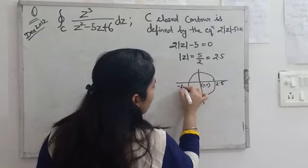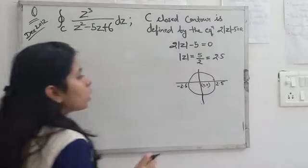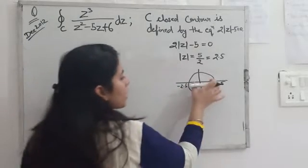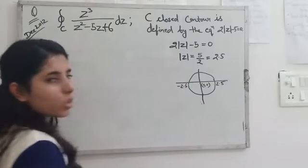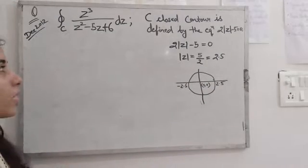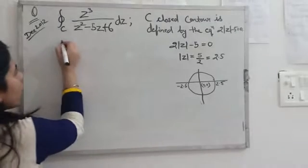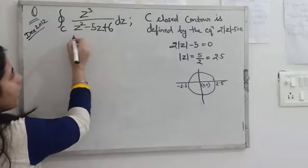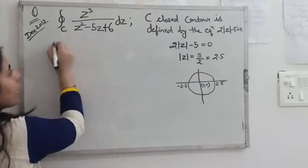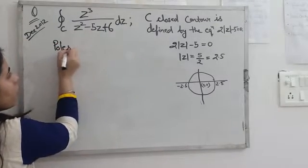The points which lie within this region will be the poles for which we will find the residues. So let's find the poles. To find poles, we set the denominator equal to zero.